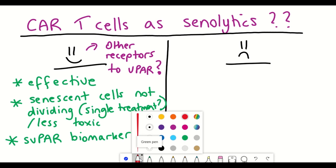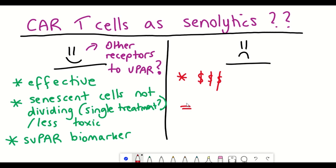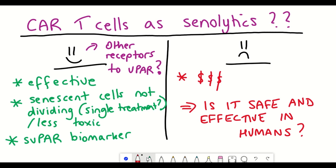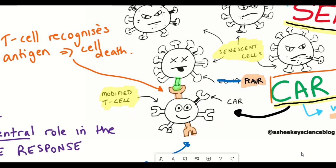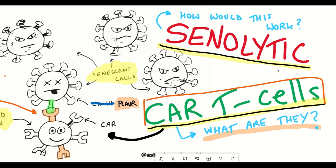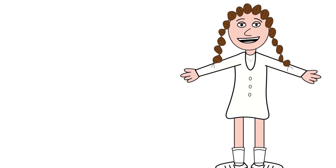The safety profile and effectiveness in humans definitely need further analysis. These treatments are also quite expensive due to the nature of reprogramming T-cells, so if more effective senolytic drugs are found, that could be an easier option. Overall, this is definitely an interesting tool, and the results seem promising. I hope you've learned something in this video — as always, thanks for listening.